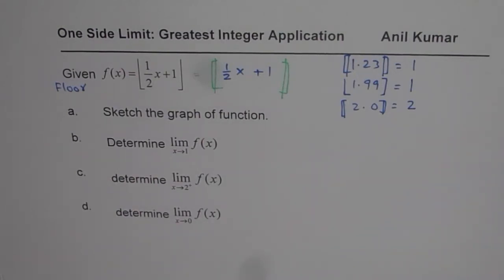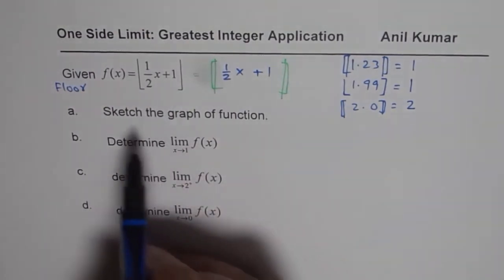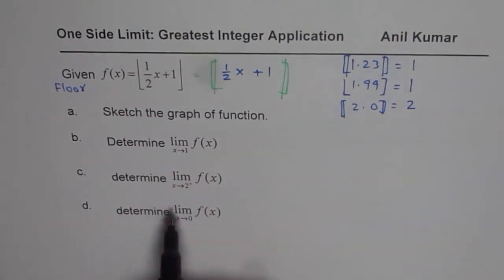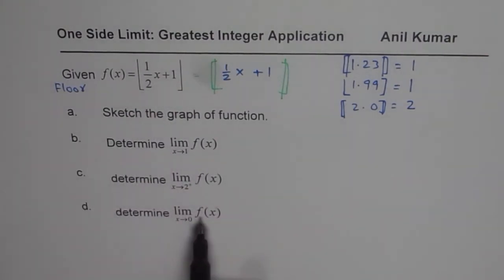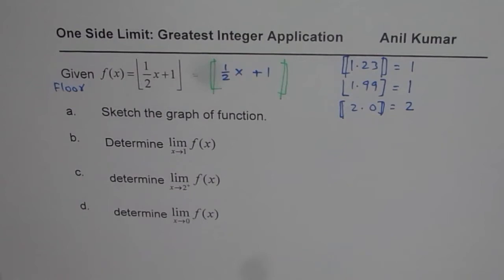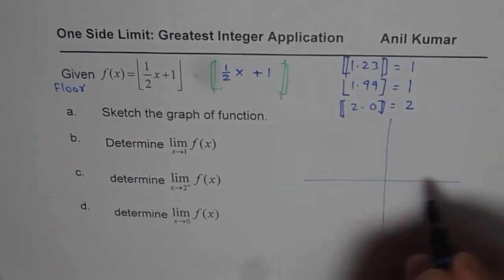So what we have here is the greatest integer function with half x plus 1 inside. We need to: first, sketch the graph of this function; second, determine the limit as x approaches 1; third, determine the limit as x approaches 2 from the right side; and fourth, determine the limit as x approaches 0.